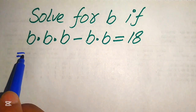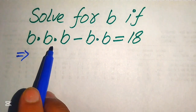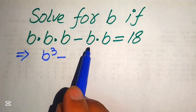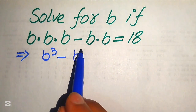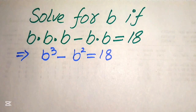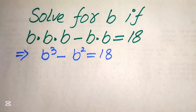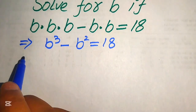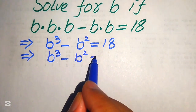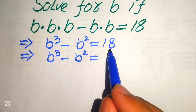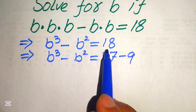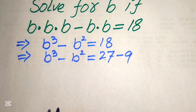First, since b is multiplied 3 times we write it as b cubed, and since b is multiplied 2 times we write it as b squared, so b cubed minus b squared equals 18. Now we break 18 on the right-hand side as 27 minus 9, since 27 minus 9 equals 18.